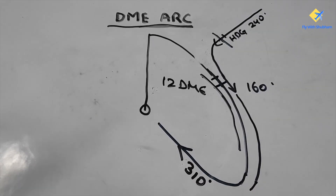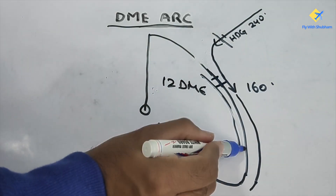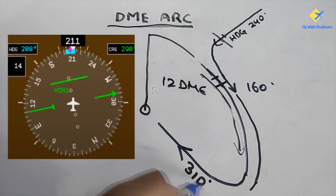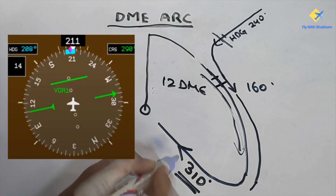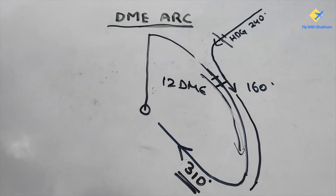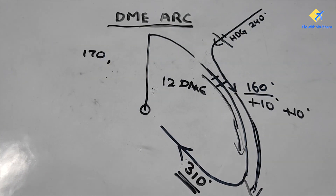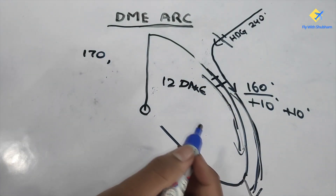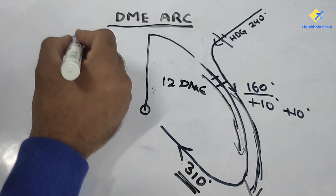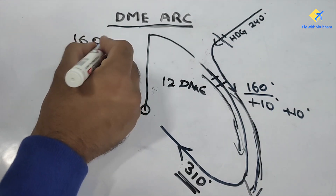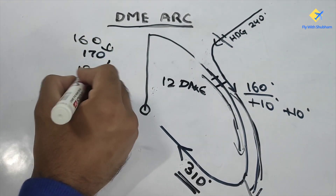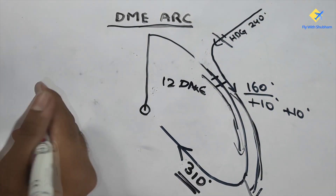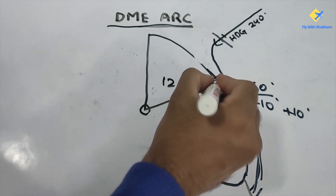Now that you are established on the DME arc, you need to know how to keep up with it using the heading and course method to establish yourself on the final course — 310 inbound to the station to land. In this DME arc, since you are turning towards the right-hand side, your heading and course will increase by 10 each. So your new heading from 160 will go to 170, then 180, then 190 and so on, while the course reflects the current radial that you are crossing.